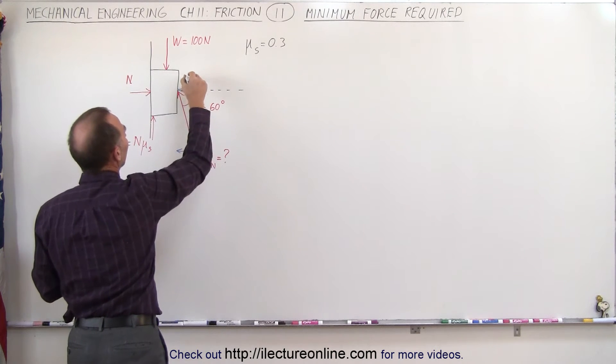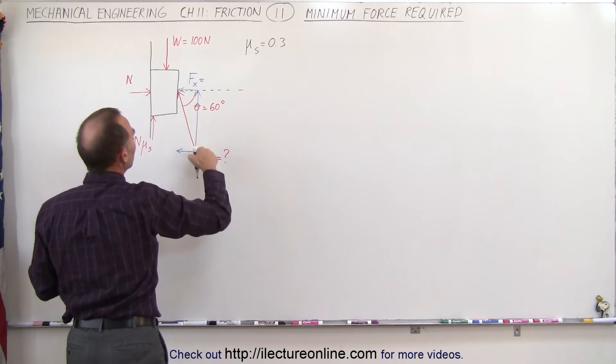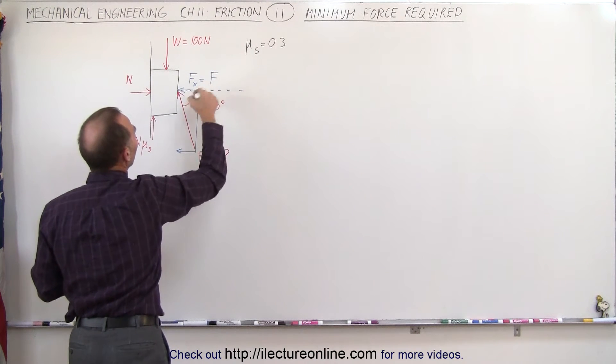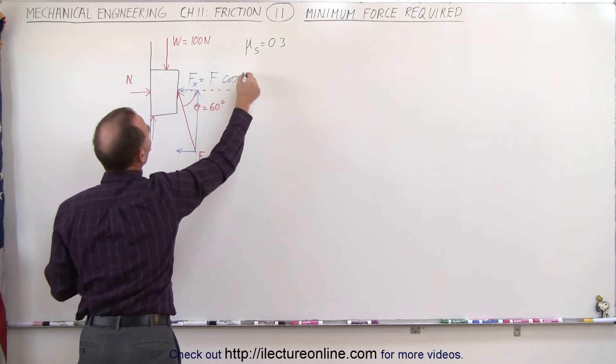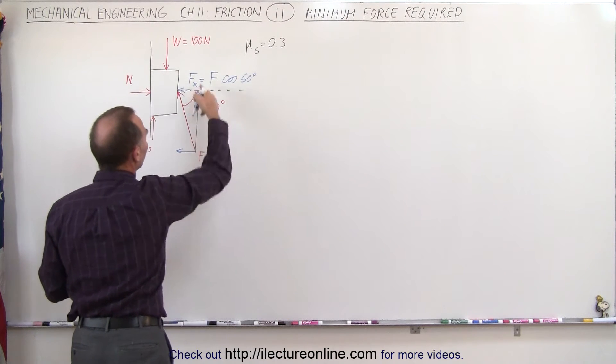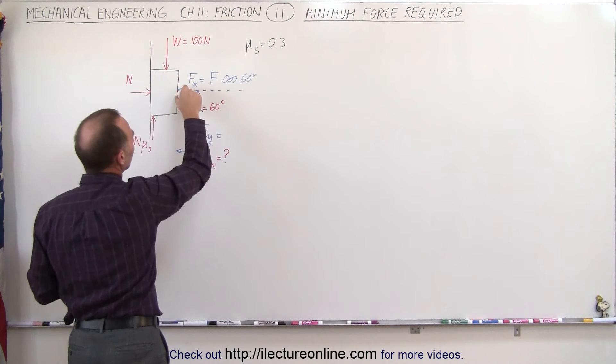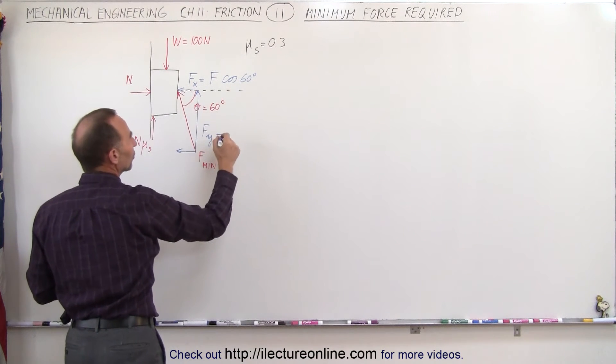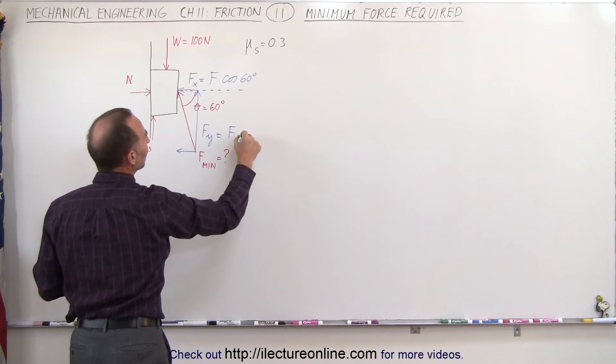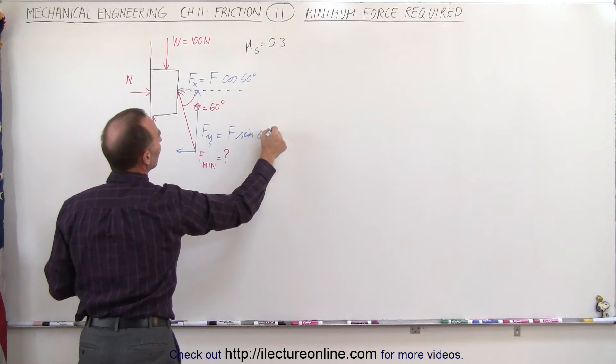So we can say that F in the x direction is going to be equal to F times the cosine of 60 degrees. The vertical component F sub y is going to be equal to—notice that this side will be opposite to this angle—so it will be F times the sine of 60 degrees.